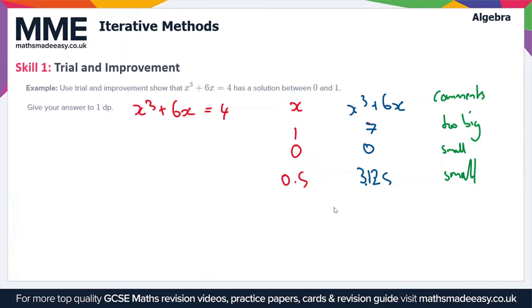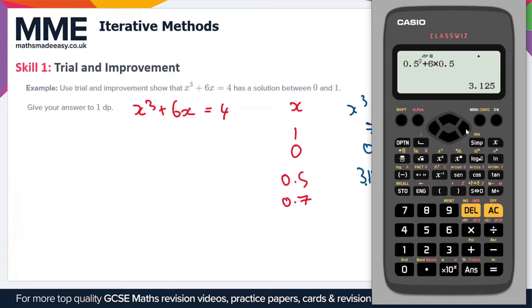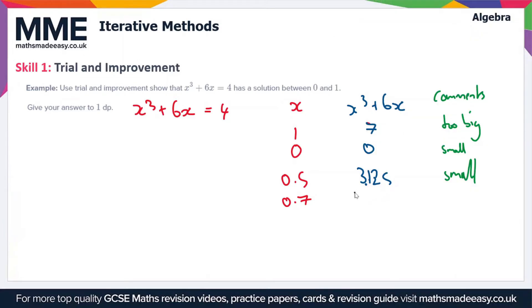So next let's try 0.7. So if we swap 0.5 for 0.7 in this calculator, we're going to get 4.543. Now 4.543, that's too large because we're aiming to get 4.